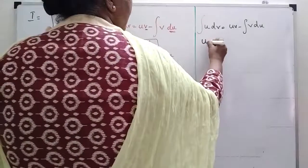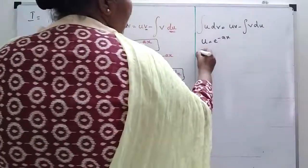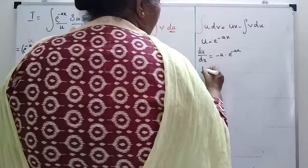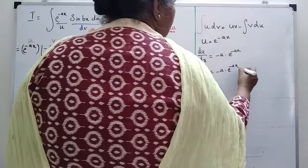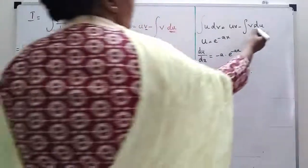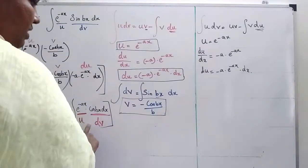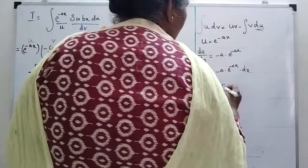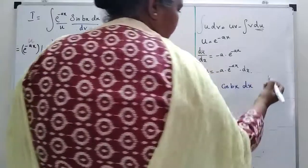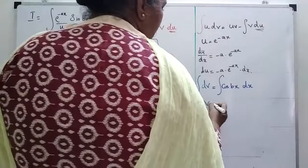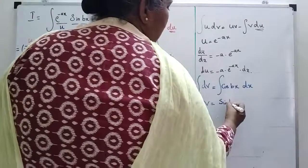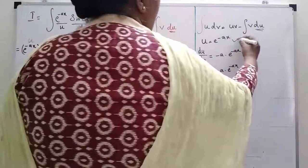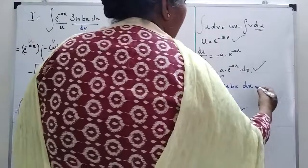Here u is e power minus ax, so du by dx is equal to minus a into e power minus ax, giving du is equal to minus a into e power minus ax dx. And dv is equal to cos bx dx, so v is equal to sin bx by b.